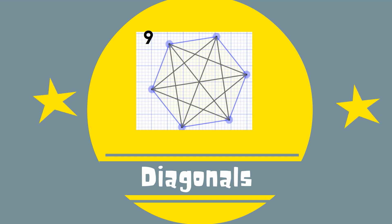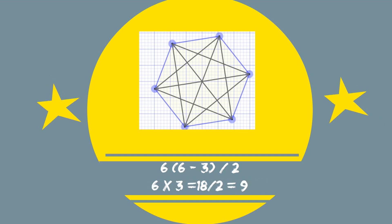You can find the number of diagonals of a hexagon by using n times in parentheses n minus 3 divided by 2, and n is the number of vertices. Here is the math.